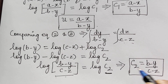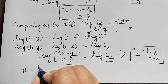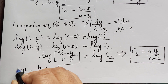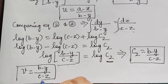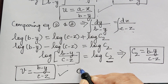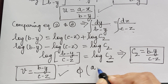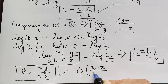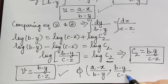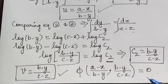Comparing both sides, C2 is equal to B minus Y divided by C minus Z. Therefore the second solution V is also obtained: V is equal to B minus Y divided by C minus Z. So we have solution U and solution V, and therefore the final solution is phi of U comma V equal to 0, where U is A minus X divided by B minus Y and V is B minus Y divided by C minus Z. This is the required final solution.